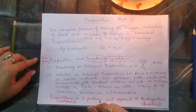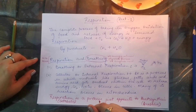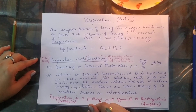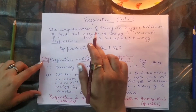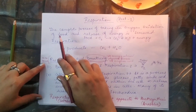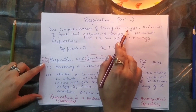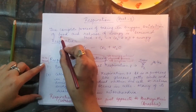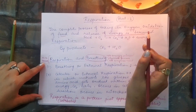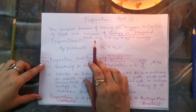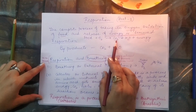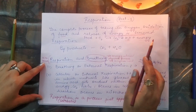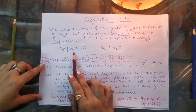Hello children, let's continue with the chapter Life Processes. We are starting with the second metabolic process, that is respiration. The term respiration means the complete process of taking in oxygen, oxidation of food, and release of energy. If we show it by an equation: food along with oxygen gives rise to CO2, water, and energy.